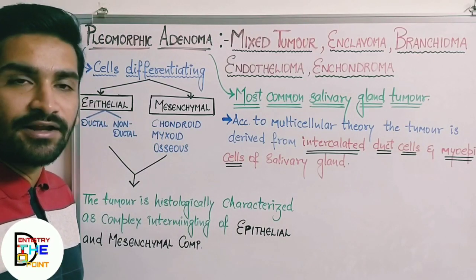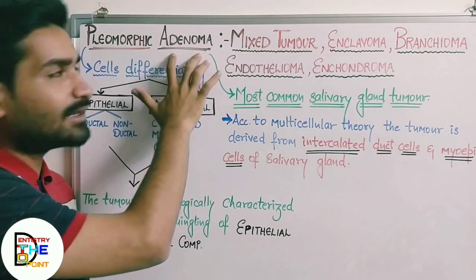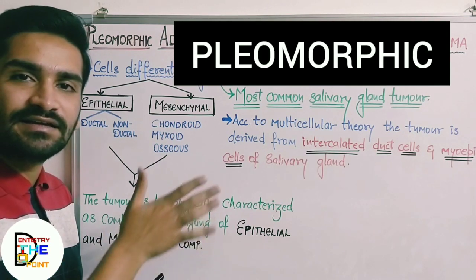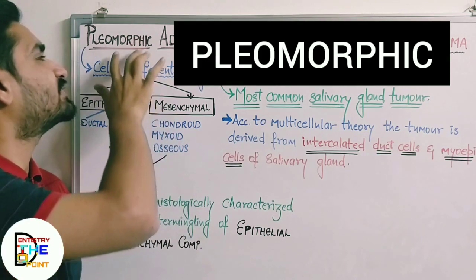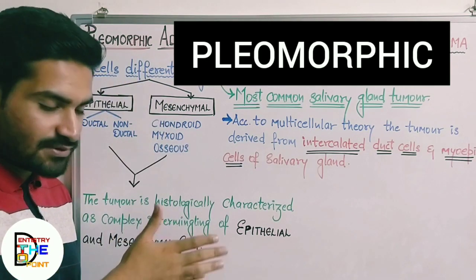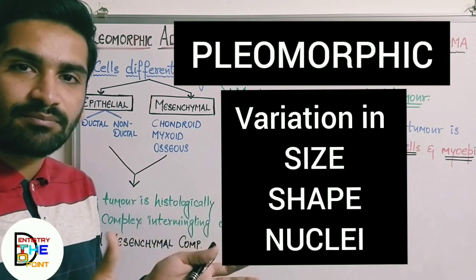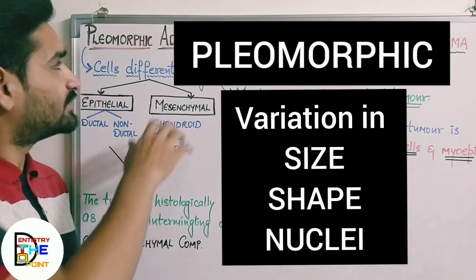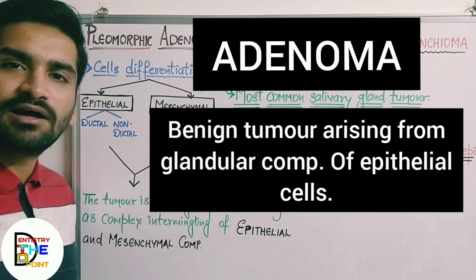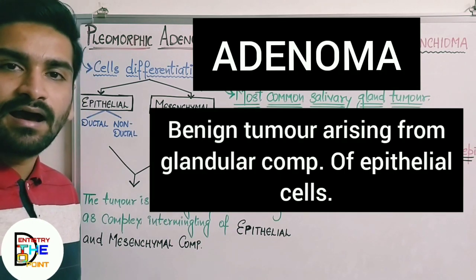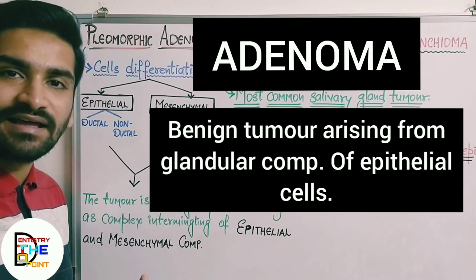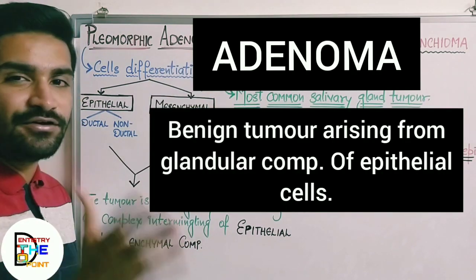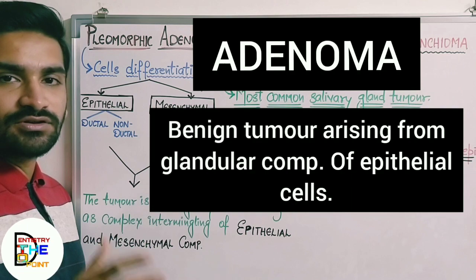Firstly, what is the meaning of the name 'pleomorphic adenoma'? Pleomorphic means any such type of cells which show variation in size, shape, and staining of their nucleus — cells with variety showing variation in size, shape, and nuclear staining. Those cells are considered pleomorphic cells. Adenoma means any benign tumor arising from the glandular tissue of the epithelial cells.